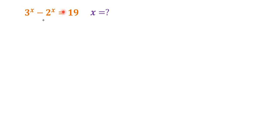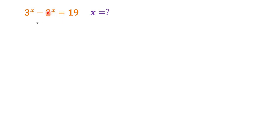Let's have a quick look at this equation. We have 3 to the power of x and 2 to the power of x, so the bases are different. Generally it is challenging to separate x from these numbers and guess the value of x, so here we would use a guess and check strategy.